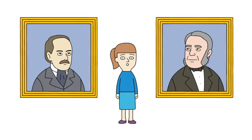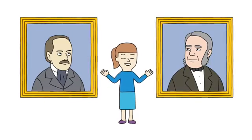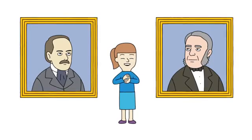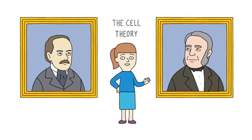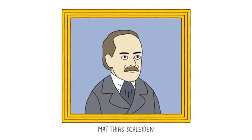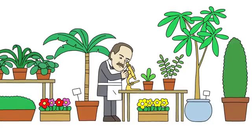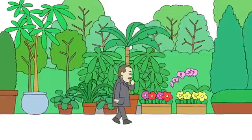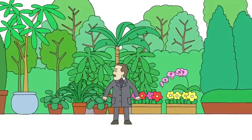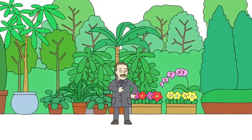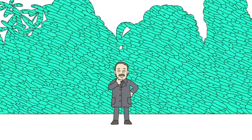Fast forward to the 1800s, where two German scientists discovered something that today we might find rather obvious, but helped tie together what we now know as the cell theory. The first scientist was Matthias Schleiden, a botanist who liked to study plants under a microscope. From his years of studying different plant species, it finally dawned on him that every single plant he had looked at were all made of cells.